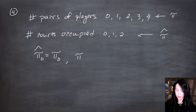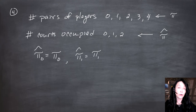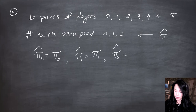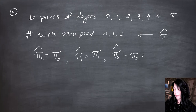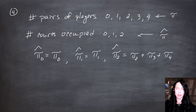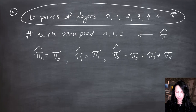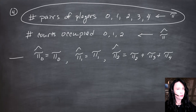Pi-one-hat equals pi-one, because the only way to have exactly one court occupied is to have exactly one pair of players. And pi-two-hat covers the case when you have two, three, or four pairs in the system. My advice is to deal with the player pairs first, then transform to number of courts.